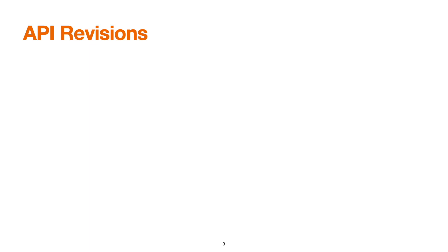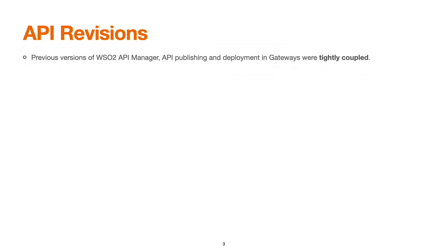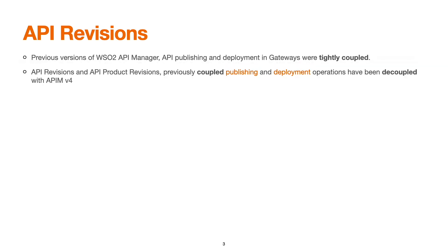Publishing displays an API in the developer portal, and deployment makes an API available for invocation via the gateway. The revision feature in WSO2 API Manager brings a new architectural change compared to previous versions. In previous versions, deploying and publishing were tightly coupled, but that has been decoupled with API Manager version 4.